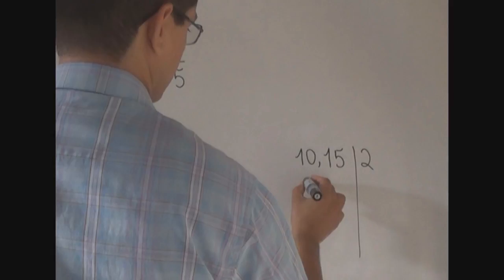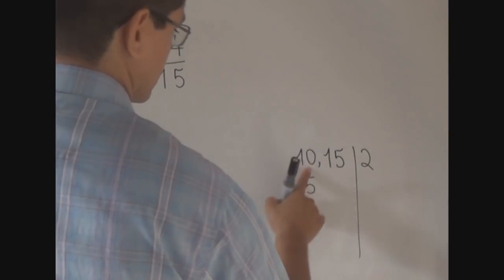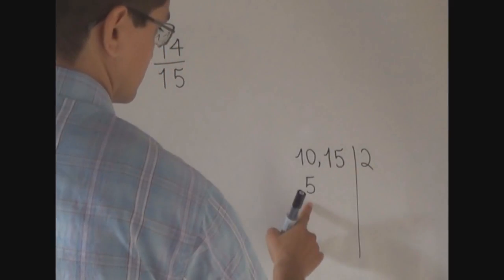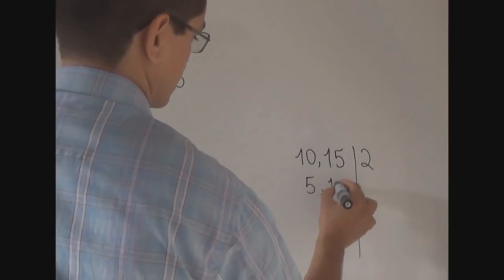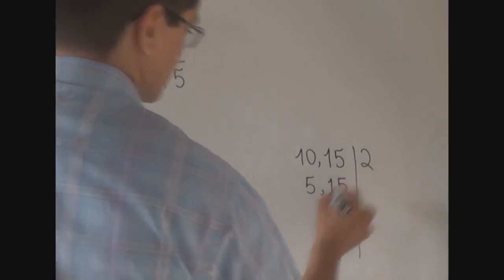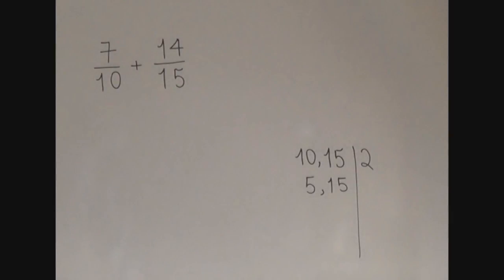Since 10 is divisible by 2, and 10 divided by 2 equals 5, because 2 times 5 equals 10, we write 5 below 10. Since 15 is not divisible by 2, we just repeat it.